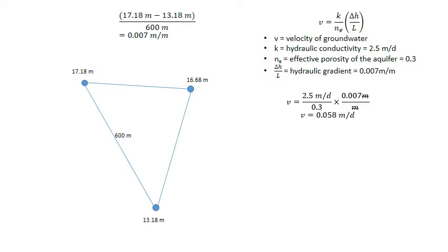When you put all those numbers into the equation we get a result of 0.058 metres per day as the velocity of the groundwater in this aquifer.